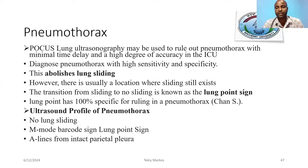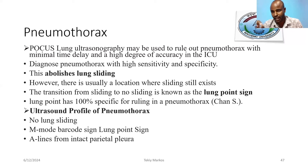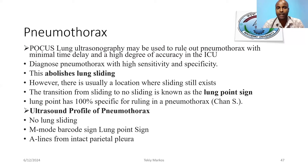Lung ultrasound can diagnose pneumonia with high sensitivity and specificity. There is lung sliding — normal lung sliding will be absent where pneumothorax exists — and there are locations where sliding still exists. The transition from absent sliding to normal sliding is known as the lung point, which is 100% specific for ruling in pneumothorax. Ultrasound features of pneumothorax are: no lung sliding, M-mode barcode sign, lung point, and A-lines from intact parietal pleura.